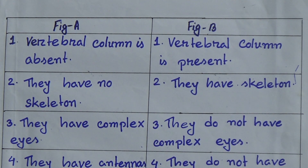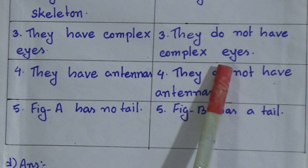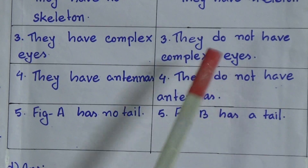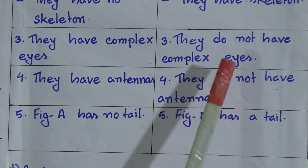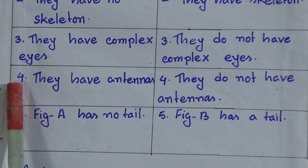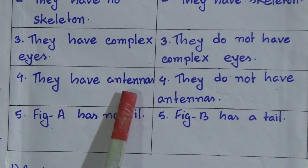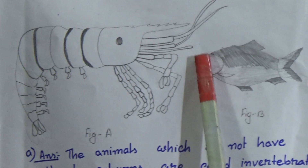In figure A, they have complex eyes — complex eyes means more than one eye, while simple eyes means there is only one eye. In figure B, they do not have complex eyes. In figure A, they have antennae, and in figure B, they do not have any antennae.